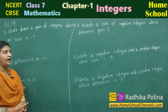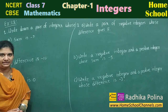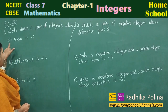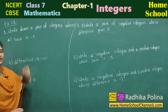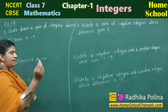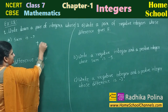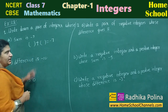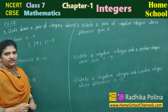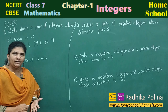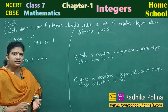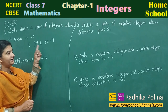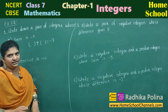First question: write down a pair of integers. You have three sub-questions and the first one is (a): sum is minus 7. Sum means plus — sum is minus 7. You take two integers; if you add them you should get minus 7. Any numbers you can take. Think in such a way that if you add these two integers, you should get minus 7.